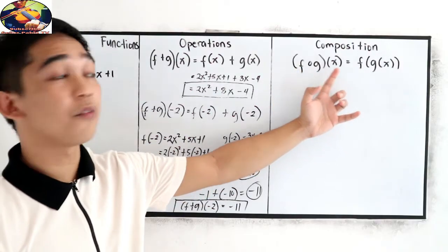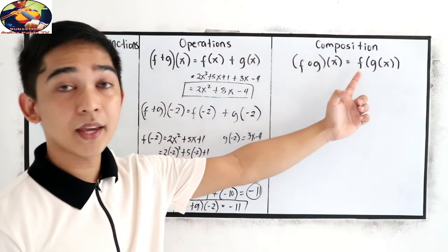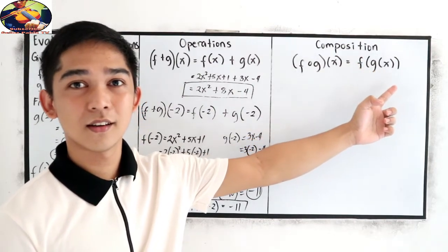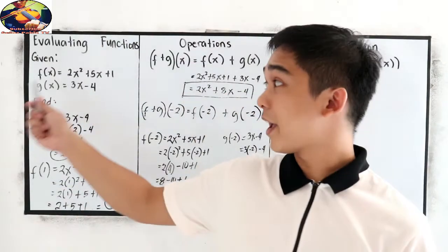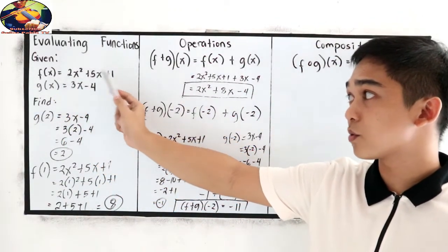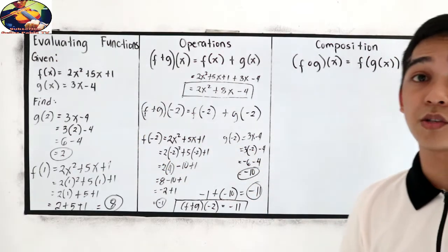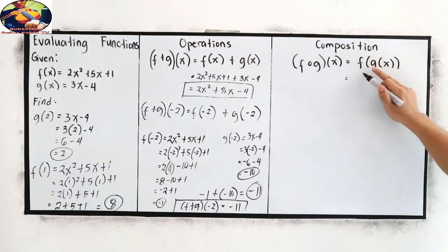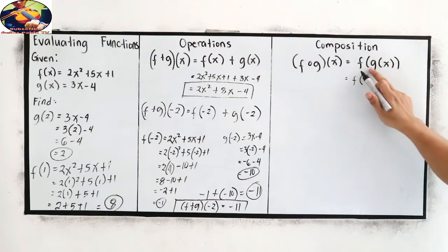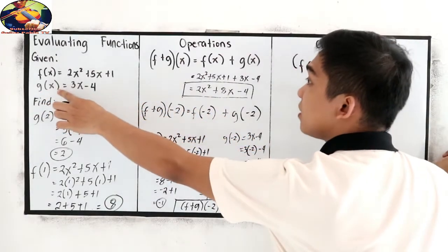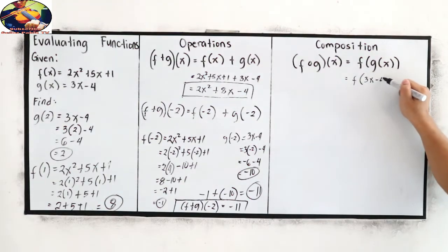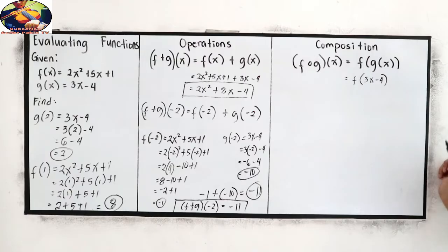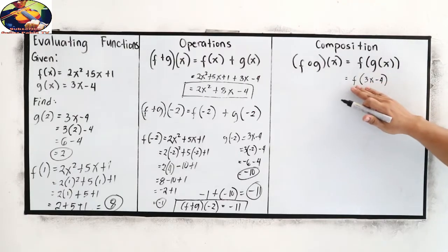f composed of g of x is denoted by f(g(x)). Using the same example: f(x) = 2x² + 5x + 1 and g(x) = 3x − 4. For f(g(x)), we first find g(x) and substitute it into f. So g(x) = 3x − 4, giving us f(3x − 4).